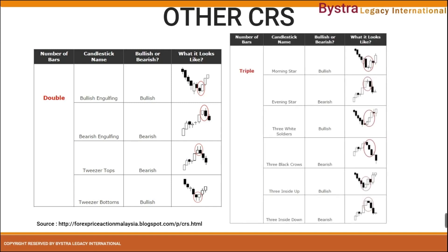For triple candlestick patterns, there are the morning stars, evening stars, three white soldiers, and three black crows. These are also among the most common CRS we will use. Three inside up and three inside down can also be used. There are many more — please go to Google, do further research, and familiarize yourself with CRS patterns that you can use as confirmation of rejection for our danger zone.